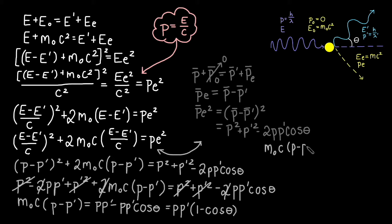We divide both sides of our equation by p p prime and by m naught c. This gets us one over p prime minus one over p on the left hand side of our equation, which is a convenient place to substitute another formula we know about momentum.